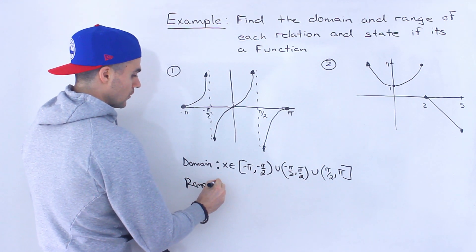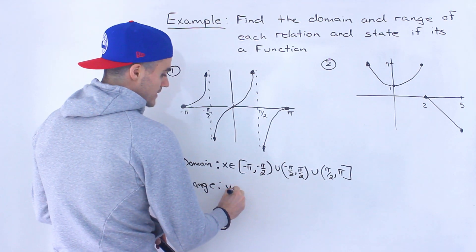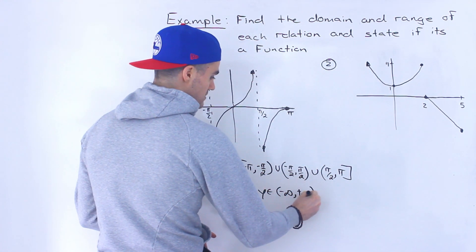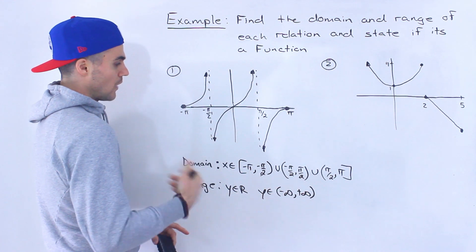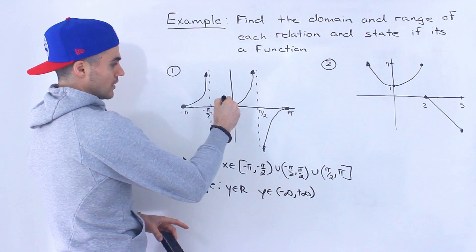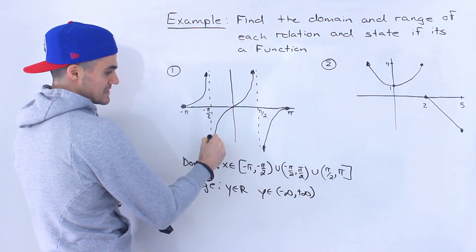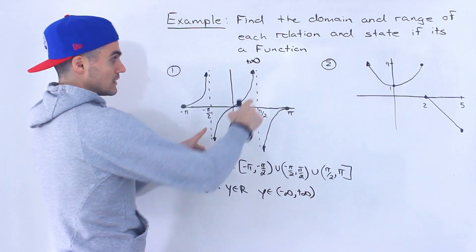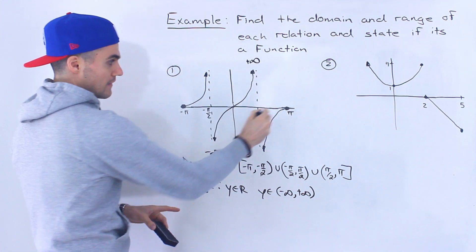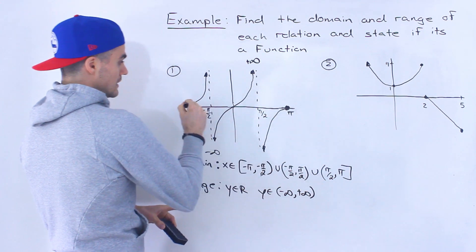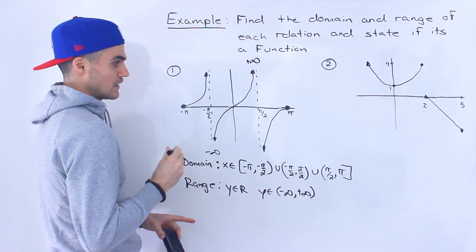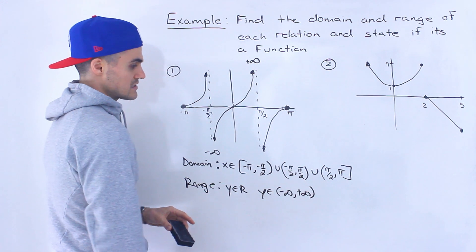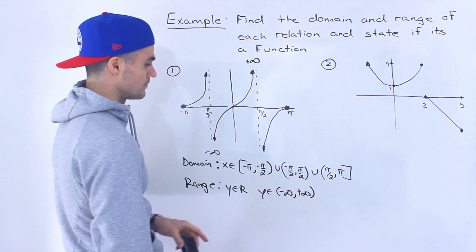Now what is the range? The range is y is an element of all real numbers — from negative infinity to positive infinity — it actually hits all y values. Because of the middle section, the curve goes all the way to negative infinity for y values and all the way to positive infinity. The outer sections go from zero to negative infinity and zero to positive infinity, so all y values are defined.